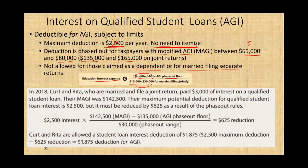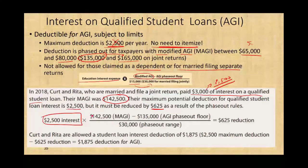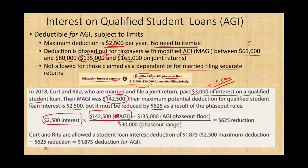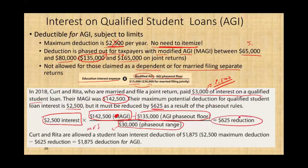Let's take a look at an example. In 2018, Kurt and Rita, who are married and filed a joint return, paid $3,000 of interest on a qualified student loan. The maximum they can deduct is $2,500. Their modified AGI is $142,500 — above $135,000 but below $165,000 — so we're going to reduce this $2,500. Their maximum potential deduction is $2,500, but it must be reduced by $625. We take the maximum $2,500 times ($142,500 minus $135,000) divided by $30,000 — the phase-out range for married filing jointly — which gives a reduction of $625. Therefore they can deduct only $1,875, which is $2,500 minus $625.